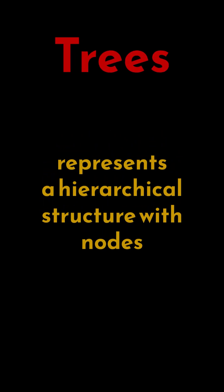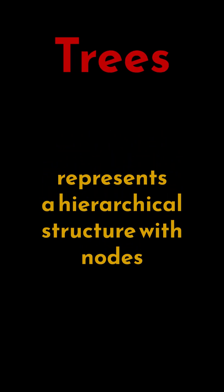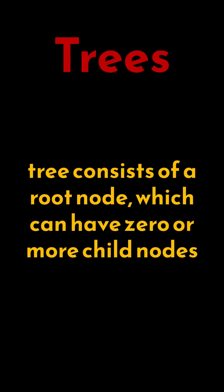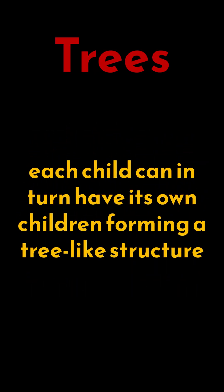A tree is a fundamental data structure that represents a hierarchical structure with nodes. Each tree consists of a root node, which can have zero or more child nodes, and each child node can in turn have its own children.